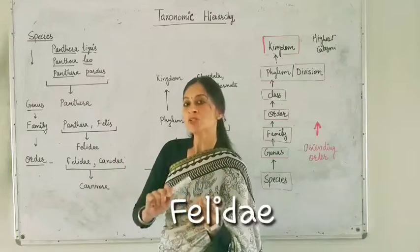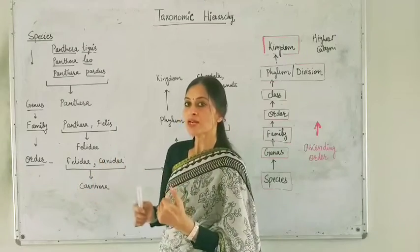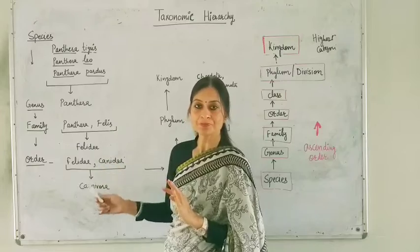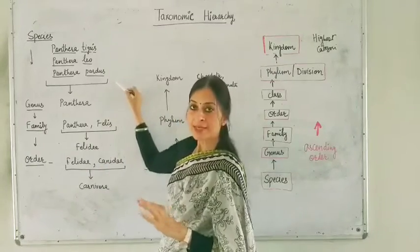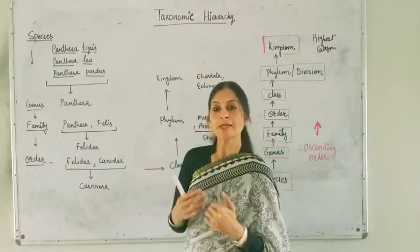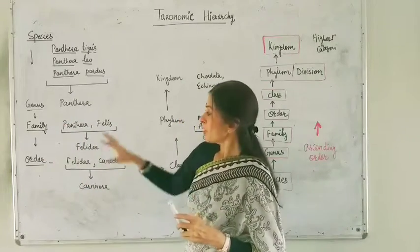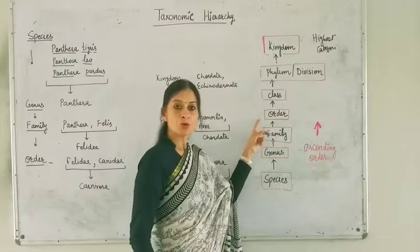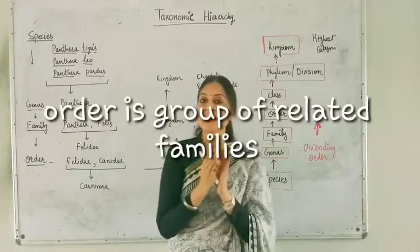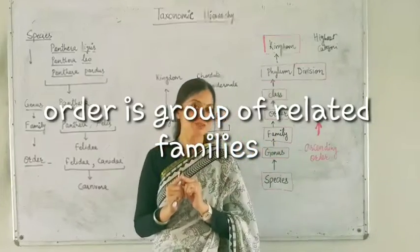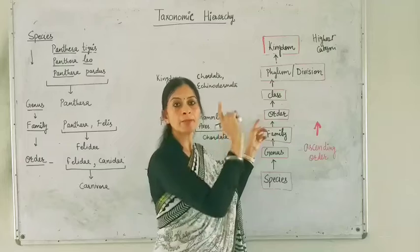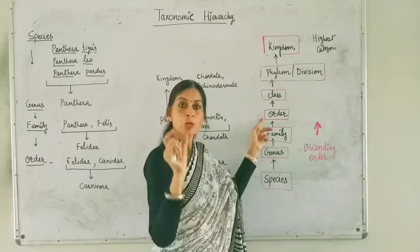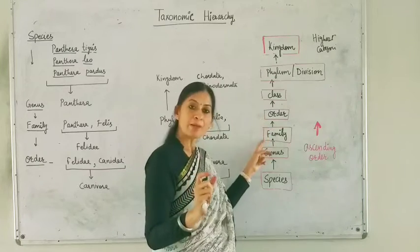This means that the cats — lion, tiger, leopard, and all these organisms — are all in a common family called Felidae. We call them big cats and small cats, but they are all in one big cat family. The next category is order. In order, the related families — those families which share common features — are grouped into a higher taxon called order.